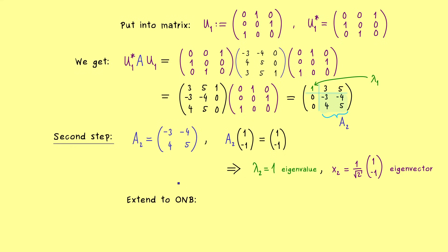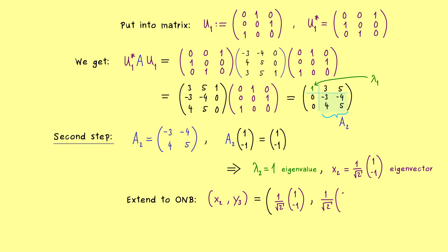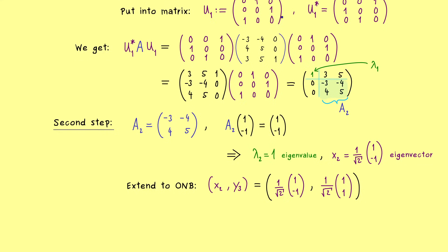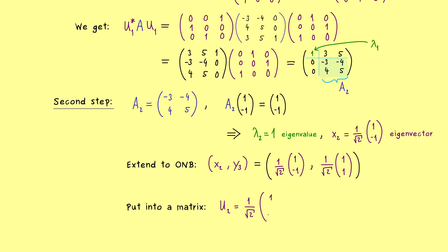This vector has length 1, and as before we extend it to an ONB of ℂ². We choose a vector y3 of length 1 orthogonal to x2. In two dimensions we just rotate the given vector, so we take (1/√2)(1, 1), which is clearly orthogonal to x2. We put these into matrix U2 and calculate the adjoint, pulling out the factor 1/√2.